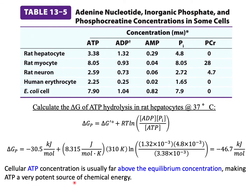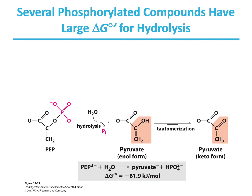Cellular ATP concentration is usually far above equilibrium concentration, making ATP a very important source of chemical energy. Besides ATP, there are other phosphorylated compounds that have large delta G° for hydrolysis. For example, phosphoenolpyruvate, or PEP, has a very large standard free energy change of hydrolysis — even larger than ATP — at minus 61.9 kJ per mole.